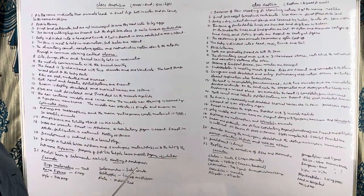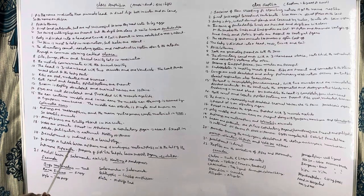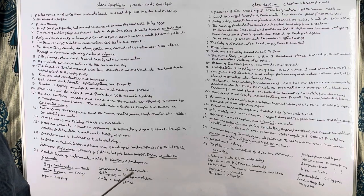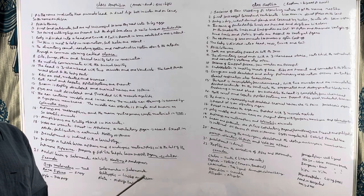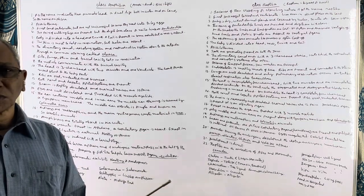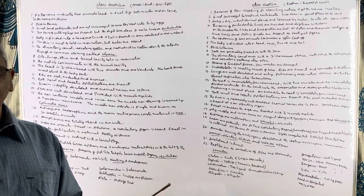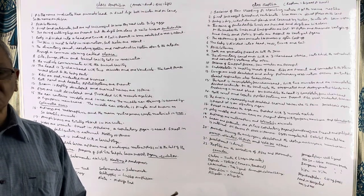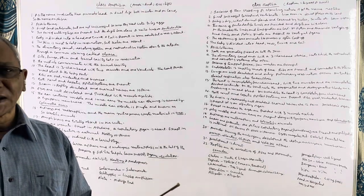They cannot maintain a constant body temperature. The body of these animals is divided into a head and a trunk. A neck is absent — neck is an adaptation for terrestrial life, and because these are not completely terrestrial, they lack a neck.